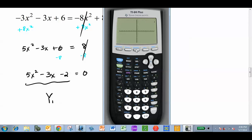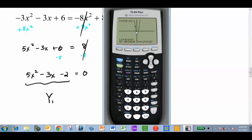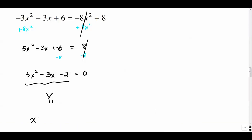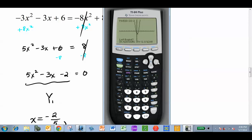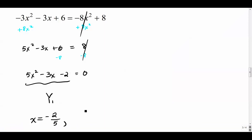Clear it out and enter 5x² - 3x - 2. Zoom standard — that looks good. Press Second, Trace, Zero. For the first intercept: left-hand bound to the left, press Enter, right-hand bound to the right, press Enter, guess really close — I get x = -0.4, which is -2/5. For the second intercept: Second, Trace, Zero, left-hand bound, right-hand bound, guess close — I get x = 1. So the two solutions are x = -2/5 and x = 1.